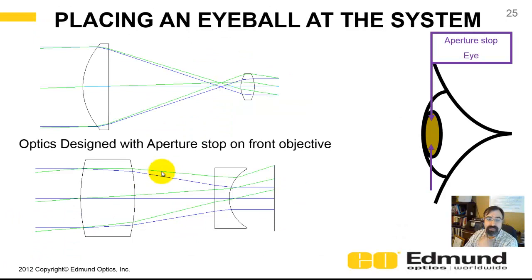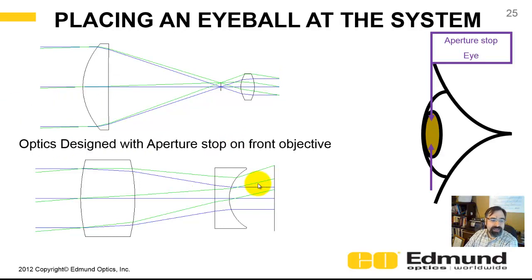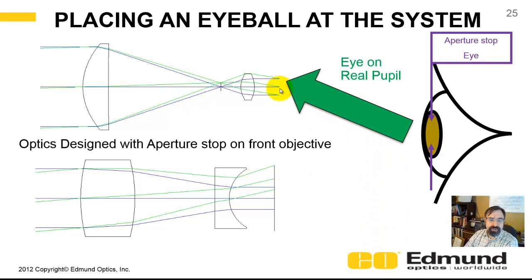Said another way: suppose these systems are designed so the objective is the limiting aperture, not the iris in your eye. In the Keplerian, the aperture stop comes to a real pupil — like a rifle scope or microscope objective, where you can see a spot where you naturally put your eye. As opposed to a Galilean, where the pupil where your eye wants to go is virtual and you physically can't place your eye there. That's the distinction between a real and a virtual pupil.